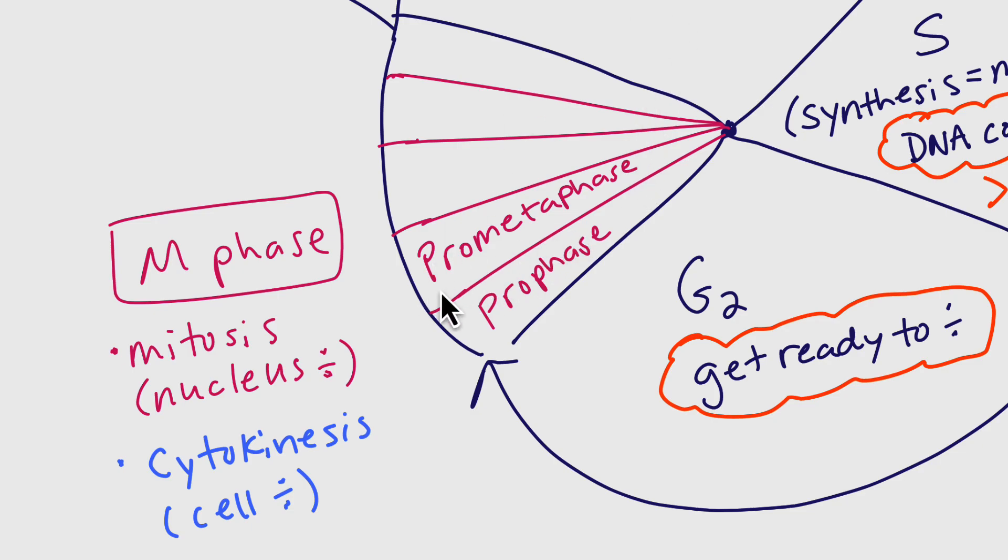Then we have what we call prometaphase, which is indeed between prophase and metaphase. It's before metaphase, so that's next: metaphase. Then we have anaphase, and we have telophase or telophase and cytokinesis overlapping.